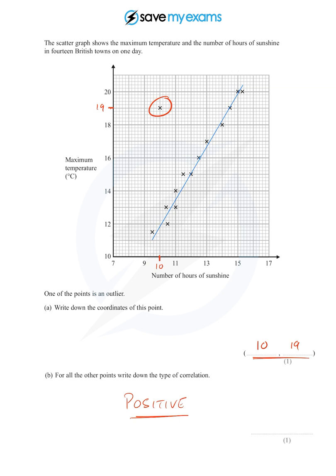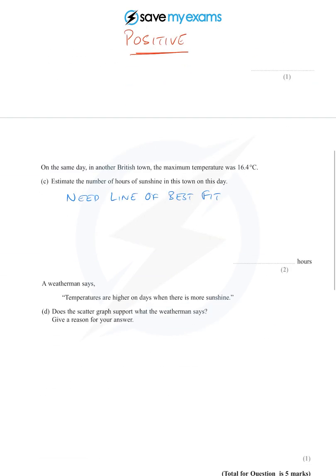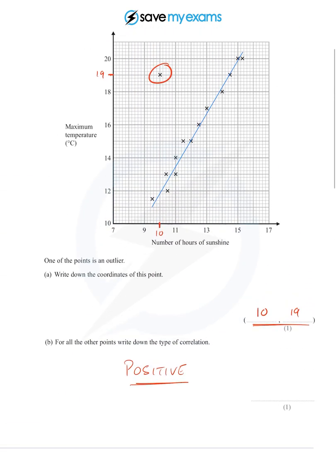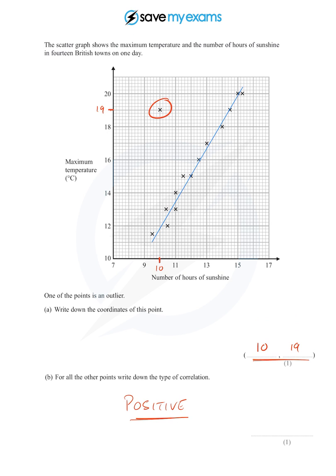I remember it said 16.4. So we simply go up to 16.4 on the vertical axis. Well, there's 17, five little squares to one degree. So one little square is 0.2. And so that will be 16.4 there.